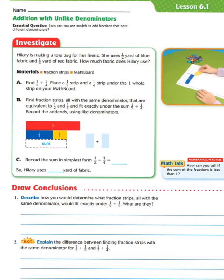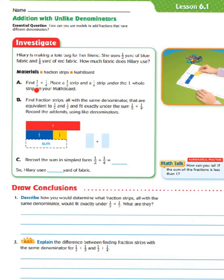Let's take a look at our investigate word problem. Hillary is making a tote bag for her friend. She uses one-half yard of blue fabric and one-fourth yard of red fabric. How much fabric does Hillary use? Within this section it's having us use fraction strips, but we're going to do it a little different. The first step in finding the answer is to find one-half plus one-fourth.